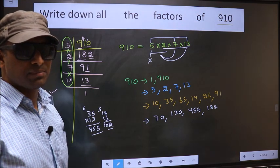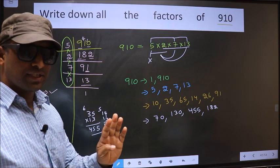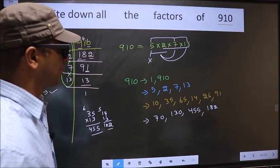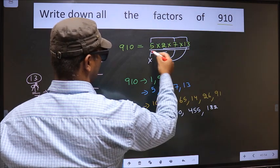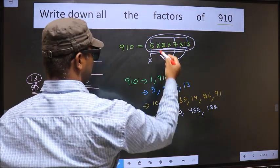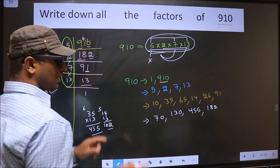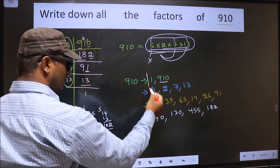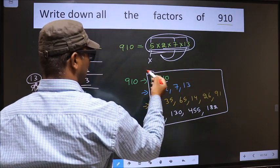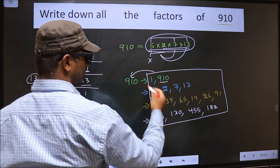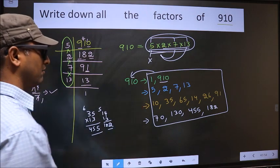Now take the combination of all 4 numbers. We have only 4 numbers, and when we take all 4 numbers we get 910 itself. Therefore, all these numbers are the factors of 910.